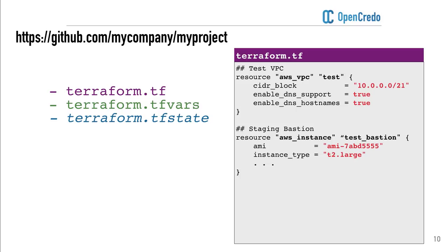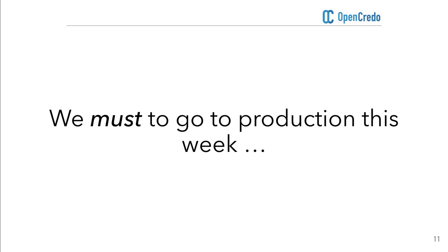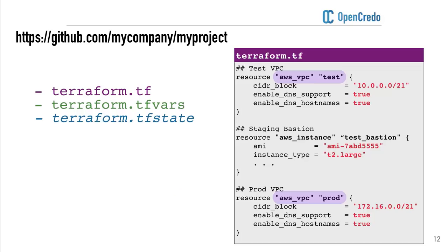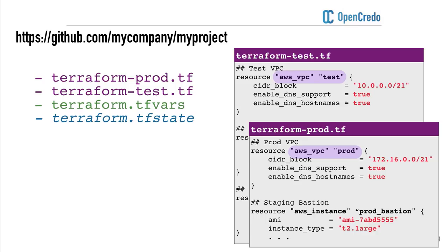Time moves on, pressure builds, and the need to deliver more formal environments becomes more urgent. Her boss says he really needs the production infrastructure. So she decides her best course of action is to take the proof of concept setup and create test and production infrastructure out of that. She makes a copy of the test resources and duplicates it for the production setup, creating two separate files — one for production and one for test — while maintaining separate TF state files. Terraform apply runs, the test infrastructure comes up, the production infrastructure comes up, and all is well.